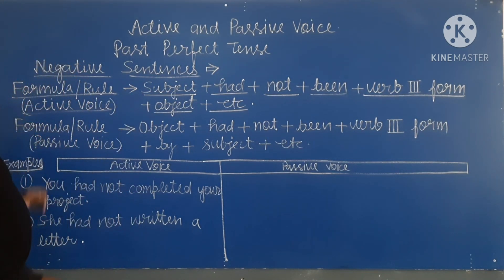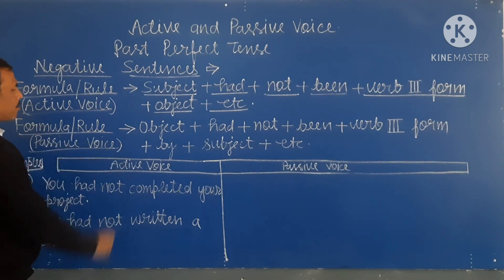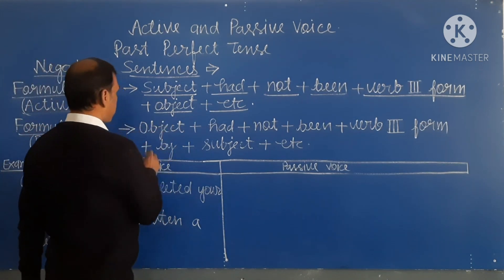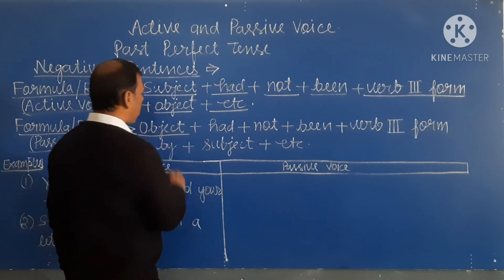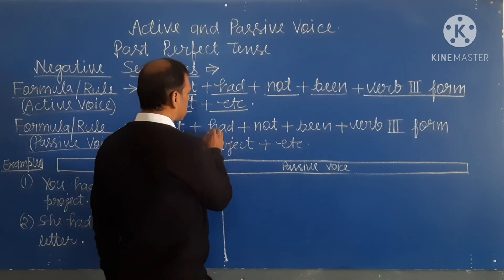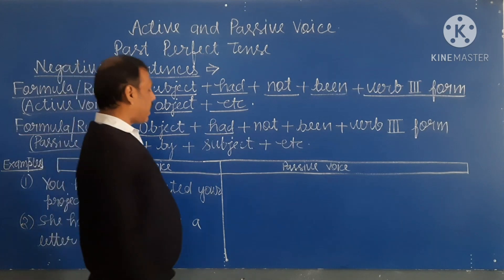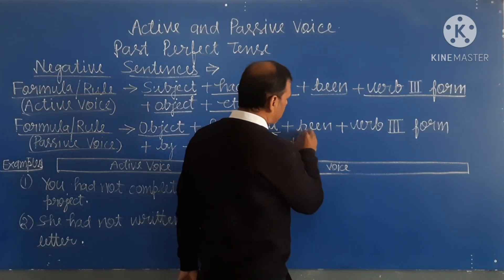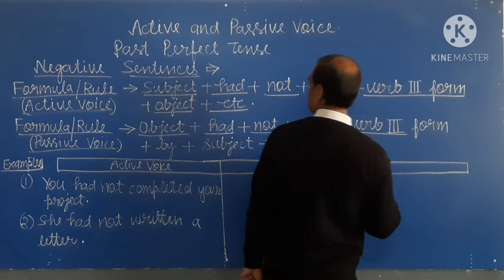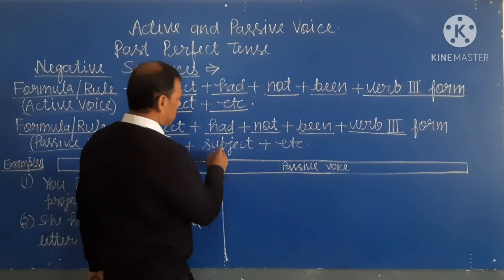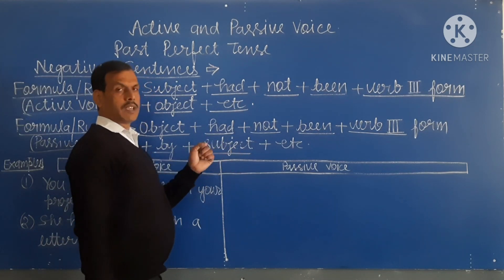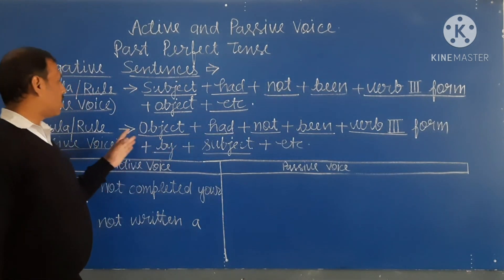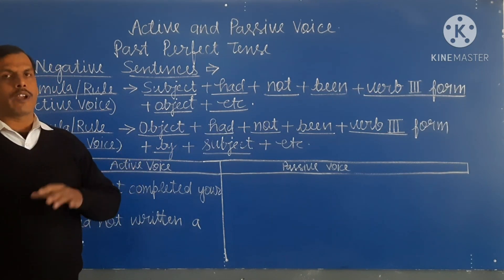The formula of passive voice for negative sentences: in passive voice, first of all we write the object of the sentence. After the object, we write 'had'. Then we write 'not' because it is a negative sentence. After 'not', we write 'been', then the third form of the verb, then 'by', then the subject in objective form, and other details.